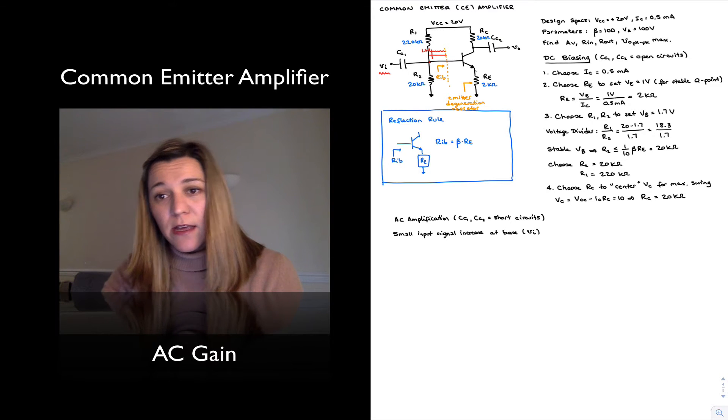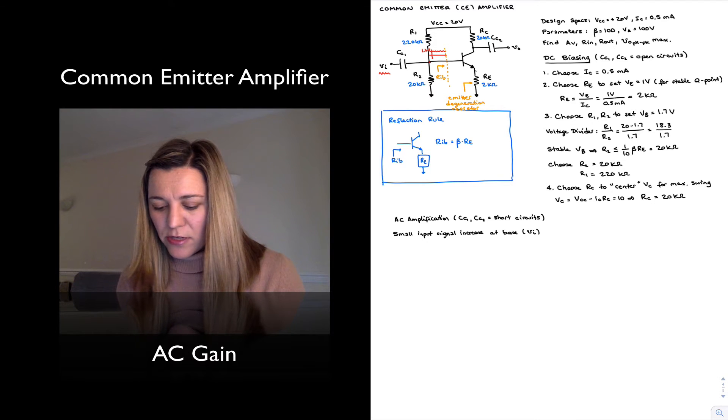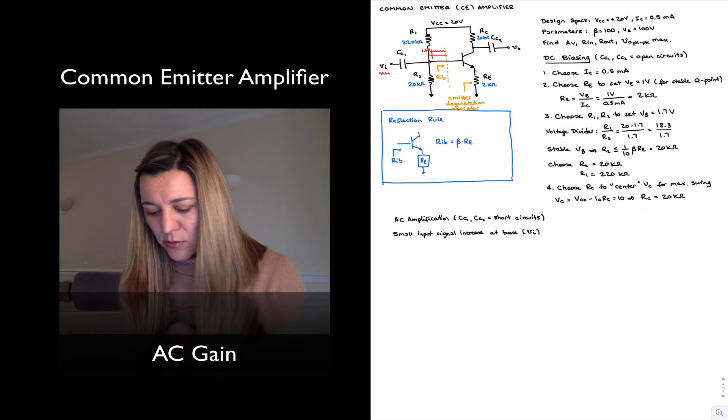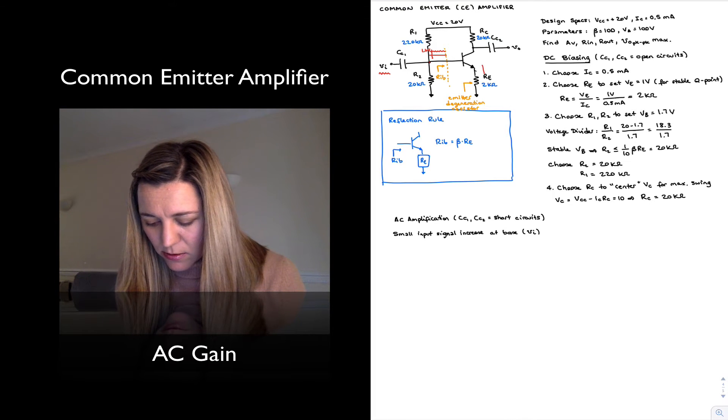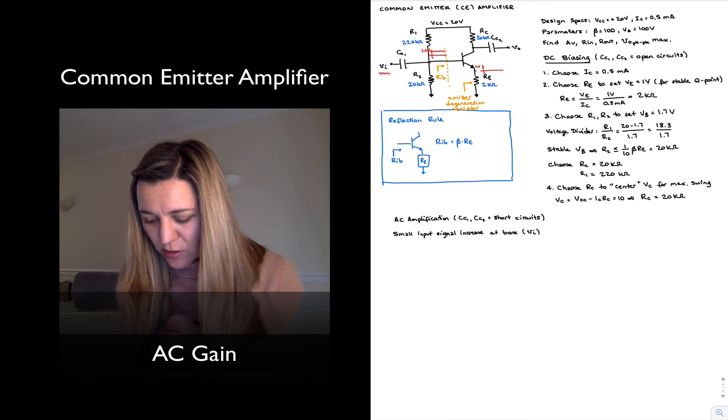Now, because there is a diode between base and emitter, it's just a PN junction, there is a 0.7 volts drop from base to emitter. And so the signal that appears at the emitter is going to be exactly the same signal, except now it's going to be offset by 1 volt, which is the DC value of the emitter voltage.